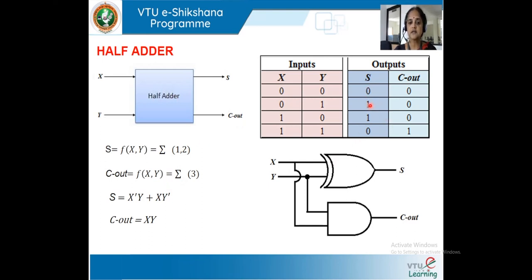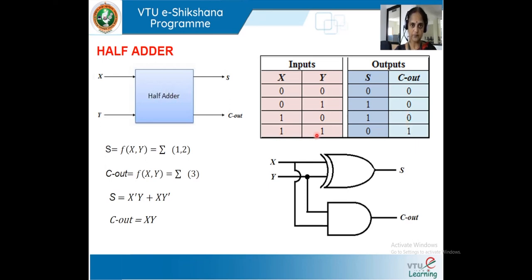Sum is one when X is zero and Y is high, and when X is high and Y is low. The equation is S = X̄Y + XȲ, which simplifies to S = X XOR Y. For carry out, C_out is high only when both inputs are high; otherwise C_out is zero. So C_out = X AND Y.